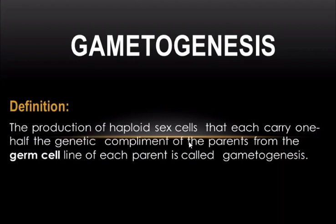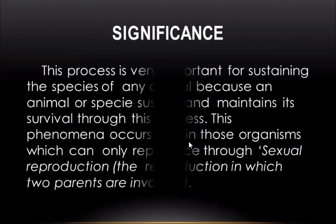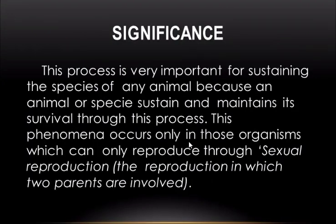Gametogenesis is the production of haploid sex cells that each carry one half of the genetic complement of the parents from the germ cell line of each parent. This is gametogenesis. If we talk about its significance, the process is very important for the sustaining of species of any animal, because an animal or species sustains and maintains its survival through this process.